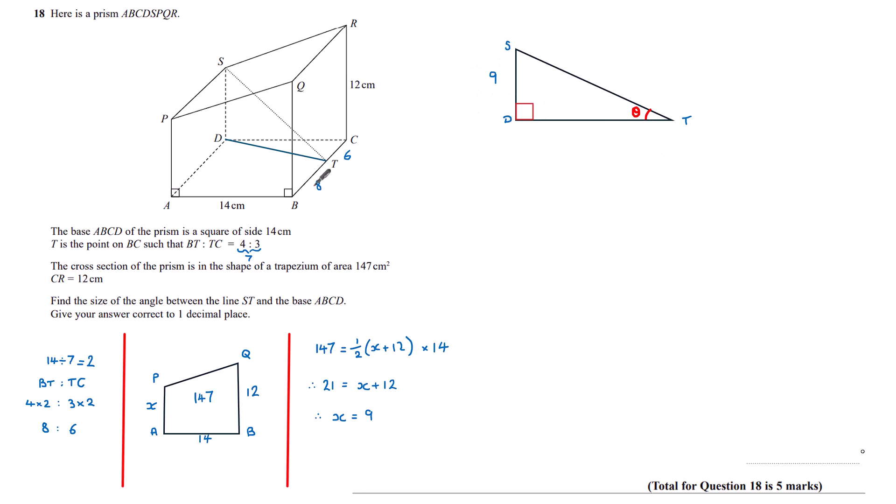If I look back at my diagram, I've got this triangle CDT, which is a right-angled triangle, and I need the distance here between D and T. So I'm labelling that side H, because I know CT is 6, and I know CD is 14.